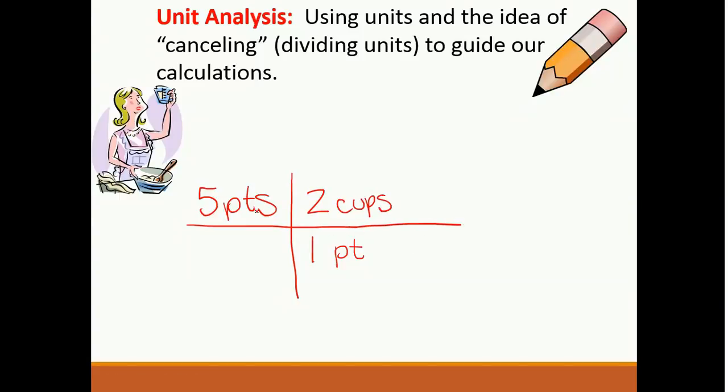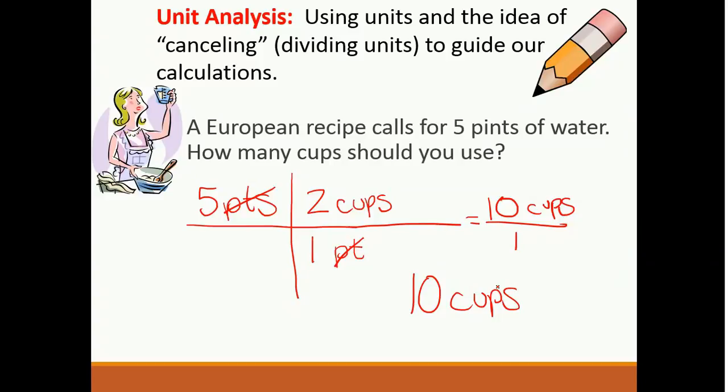Notice now my pints are going to cancel out because it would be pints over pints. They're going to cancel out now. So now I can multiply across: 5 times 2, 10 cups, over 1. So my answer is 10 cups. It's going to take me 10 cups to make my recipe.